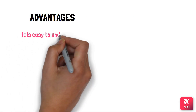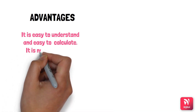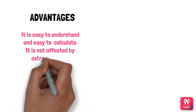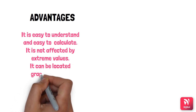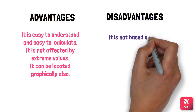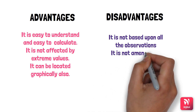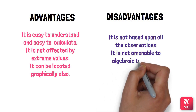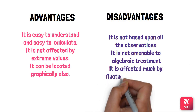The advantages of the median are that it is easy to understand and easy to calculate — you simply arrange in ascending or descending order and select the middle value. It is not affected by extreme values; even if you have values like 2, 4, 6, 8 and 2000, you only select the middle one. Disadvantages: it is not based upon all observations, it is not amenable to algebraic treatment, and it is affected by fluctuations of sampling.